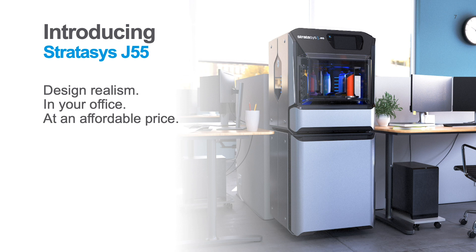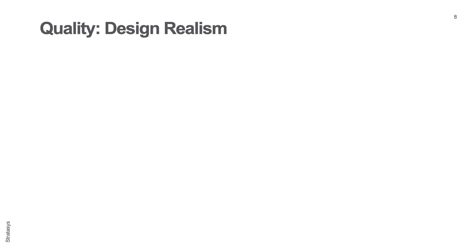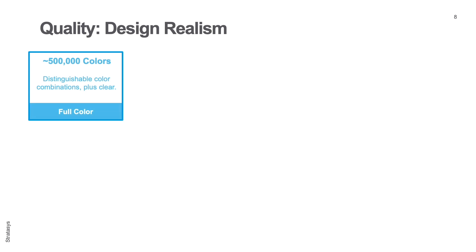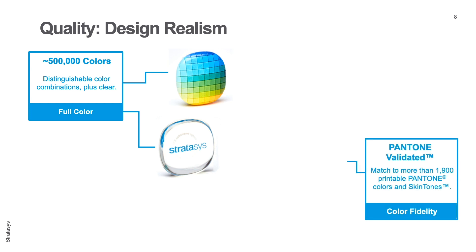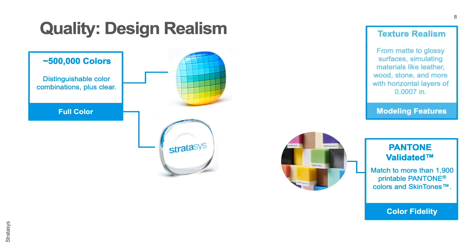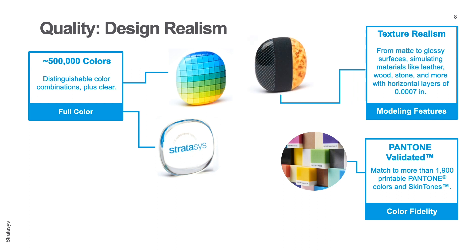Design realism means putting quality design outputs in your hands. With an astonishing amount of color — nearly 500,000 color combinations to choose from — as well as 1,900 Pantone validated printable colors, texture mapping and gradients, your parts will have the look, the feel, the function, and the geometric accuracy you need. This means color fidelity, texture realism, and the ability to simulate surfaces like glass, wood, leather, stitches, saturated color, PC appearance, matte surfaces, and much more.